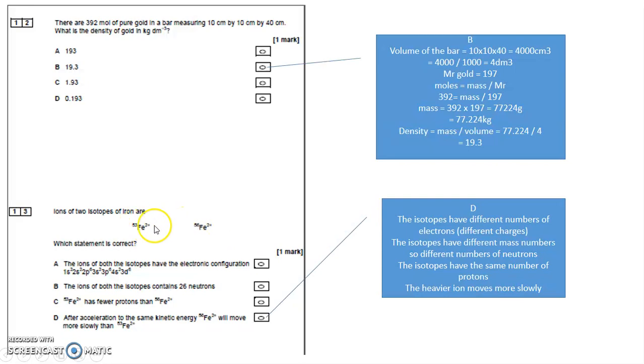But the number of protons and electrons are the same, unless they've become ions and lost electrons. And since they're two different charged ions, they've lost different numbers of electrons. And so the electrons aren't the same, and so the electronic configuration is not going to be the same.